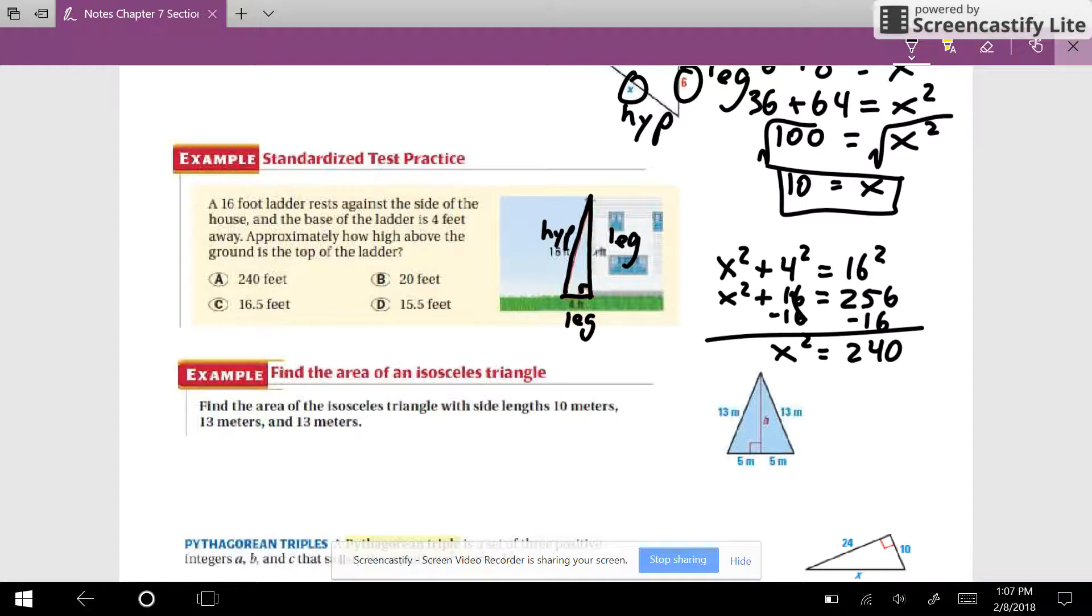And like we talked about in class, normally I want exact answers, but if I look at the multiple choice questions, they're all in decimals, so it's okay in this case to use the calculator. So type in your calculator, you'll want to grab one, type in square root of 240, and we see that it's about 15.4919 et cetera. So about 15.5. So D is the answer.